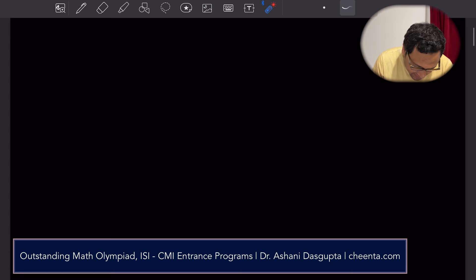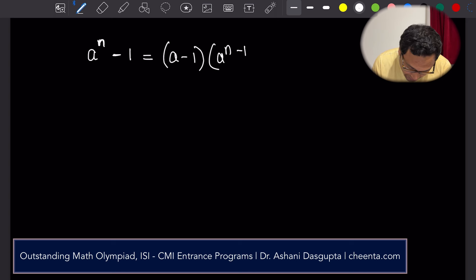The identity is this, that if you have any number a, then a to the power n minus 1 can be factorized as a minus 1 times a to the power n minus 1, a to the power n minus 2, up to a plus 1.